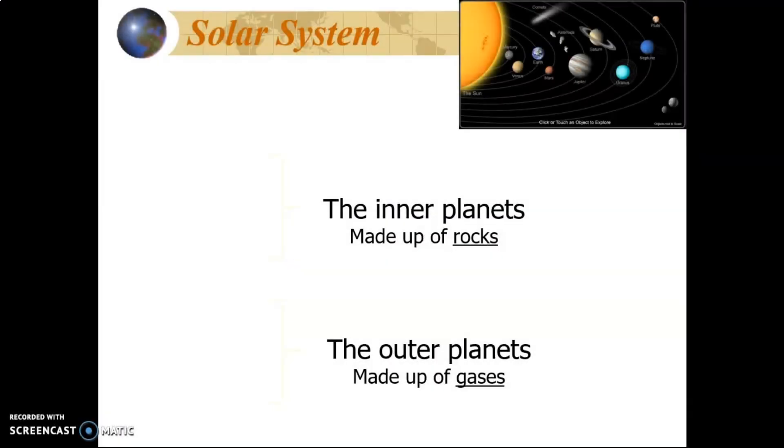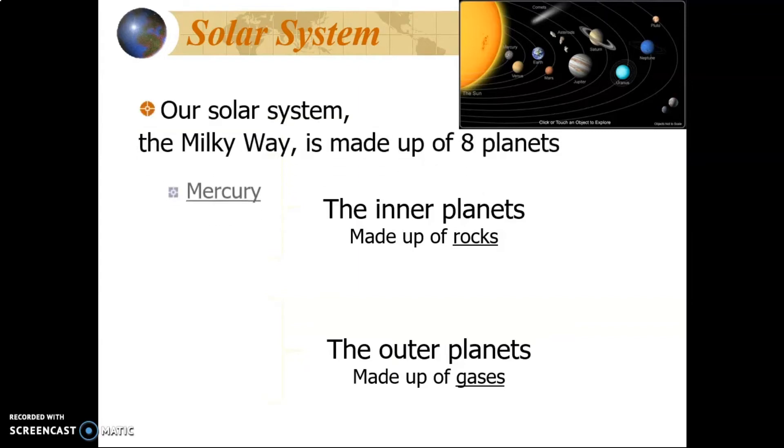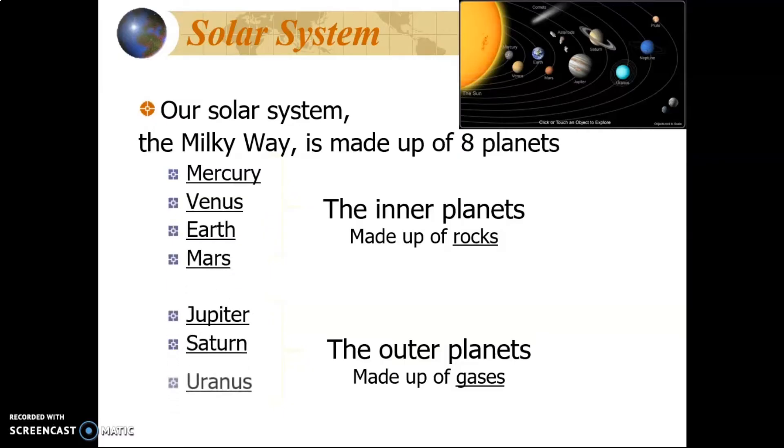So, to summarize, our solar system is made of eight planets. Each planet has its own characteristics and travels on its own path around the Sun. Mercury, Venus, Earth, and Mars make up the inner planets and are made of rock.